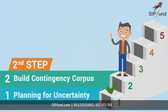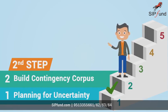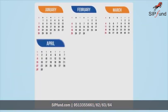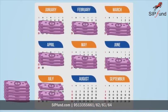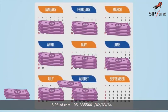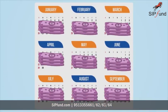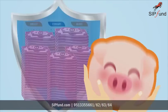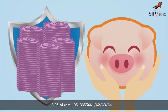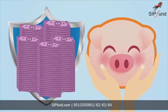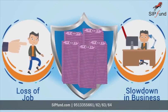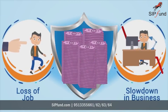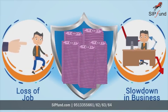Step 2 — Build Contingency Corpus: build a contingency corpus of up to 6 to 9 months of your monthly expenses. This will protect your long-term investments from contingencies like loss of job or slowdown in business.